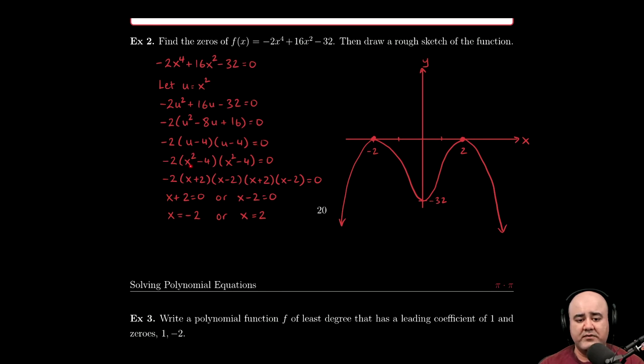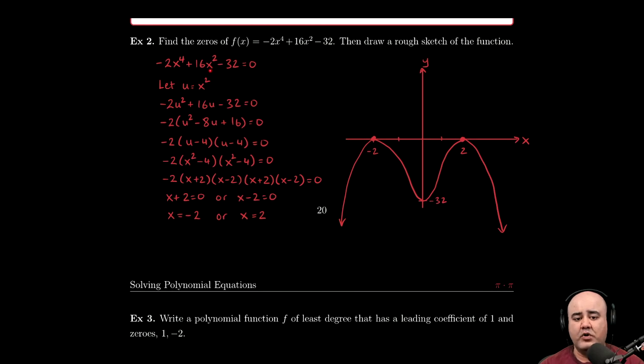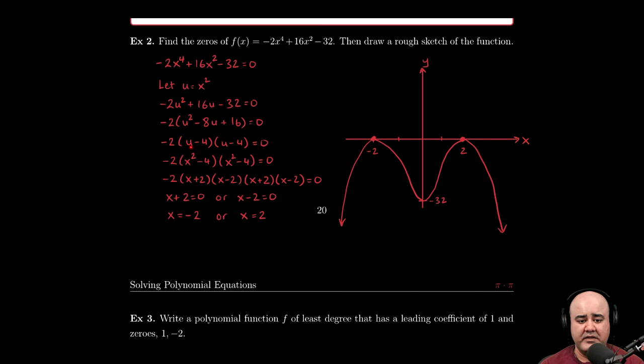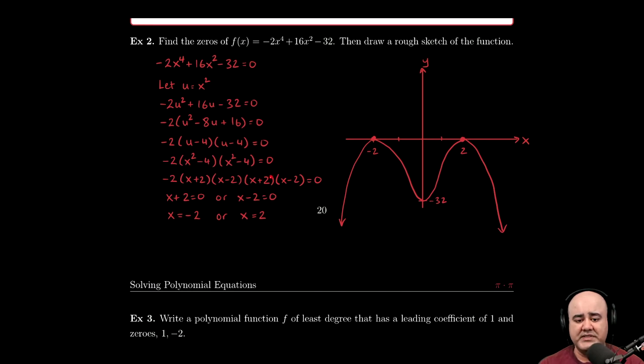u can be back substituted in for x squared. Now, if we start the problem in x land, we can go to u land for vacation, but we have to go home, we have to go back to x land before we end the problem. So u gets replaced again with x squared. So now the equation becomes negative two times x squared minus four times x squared minus four equals zero.